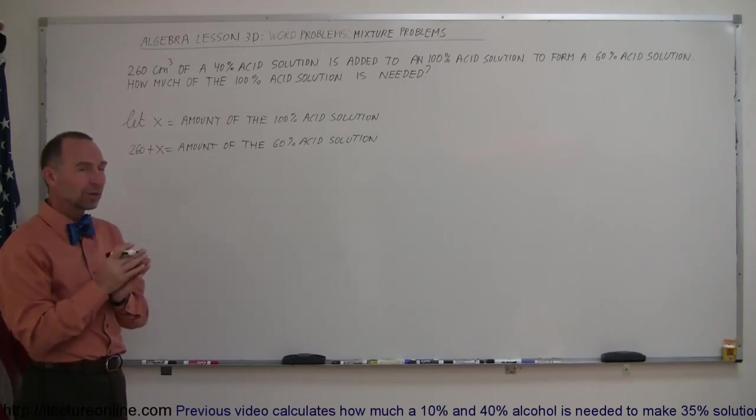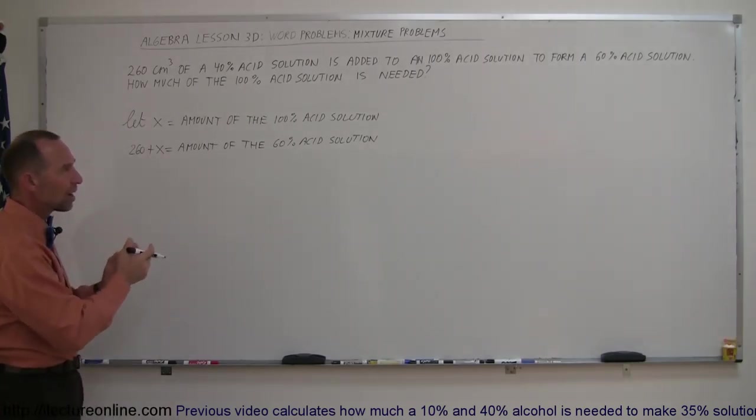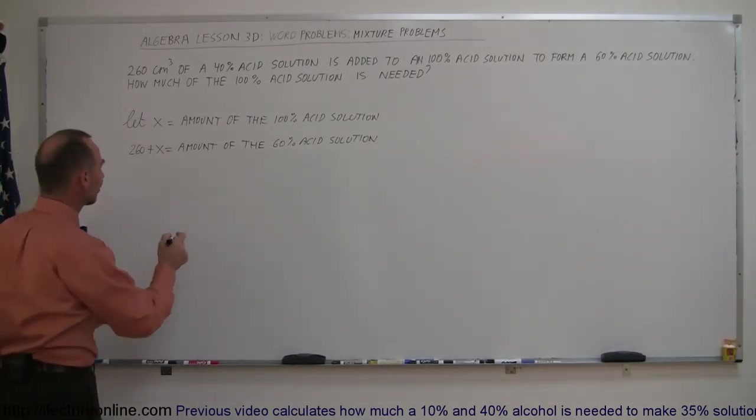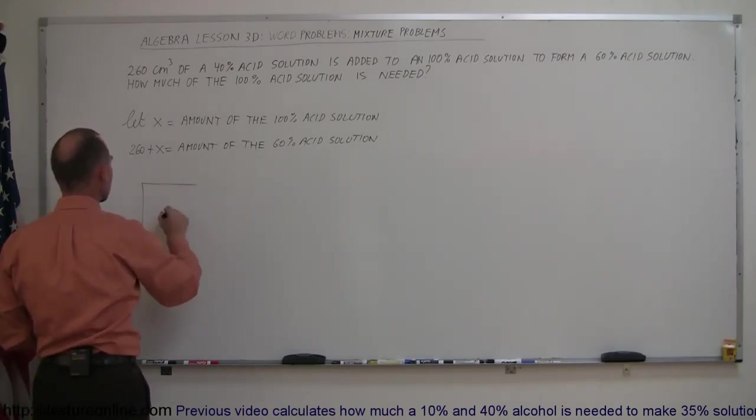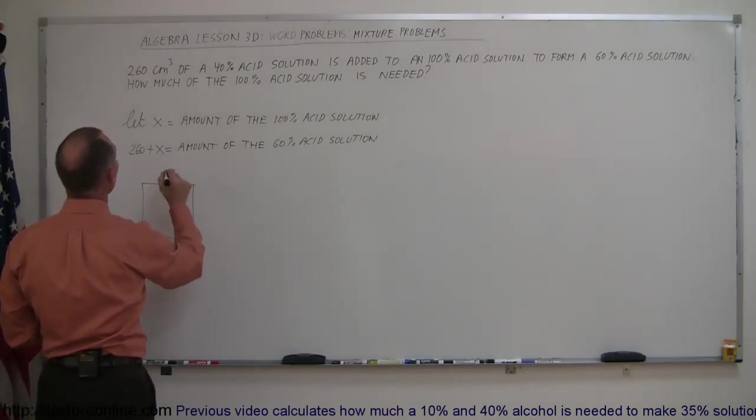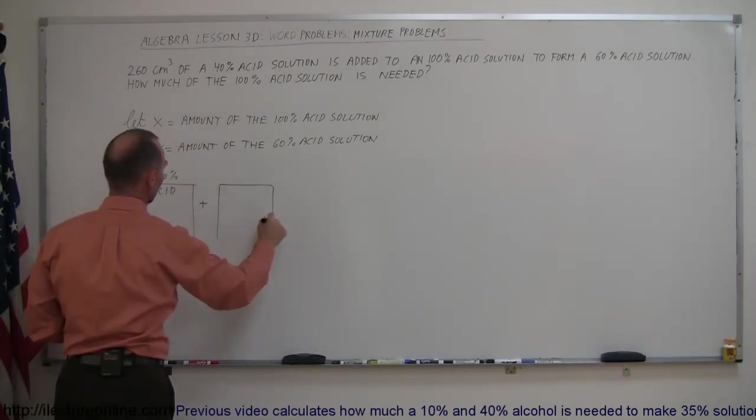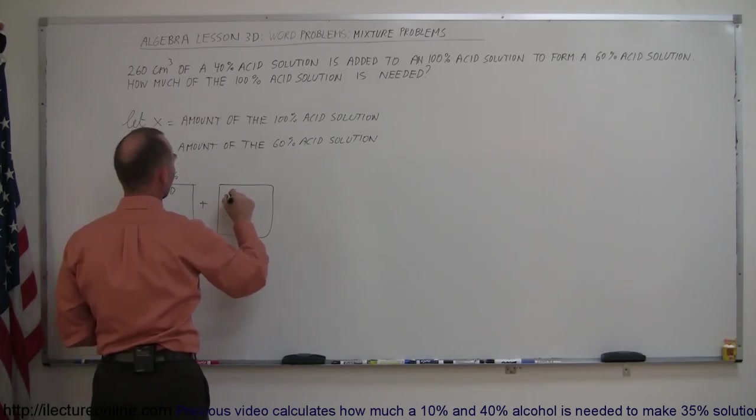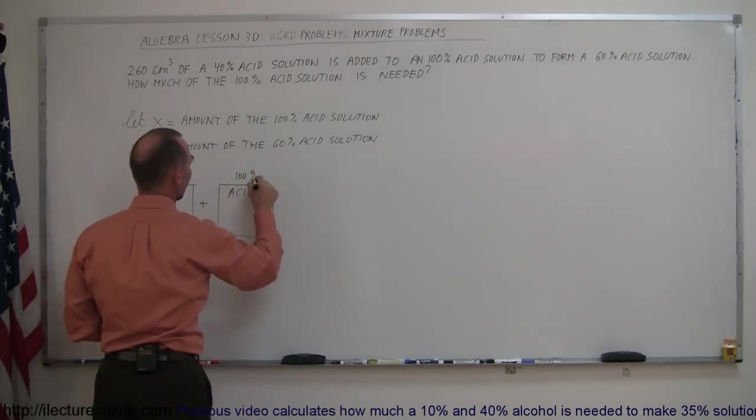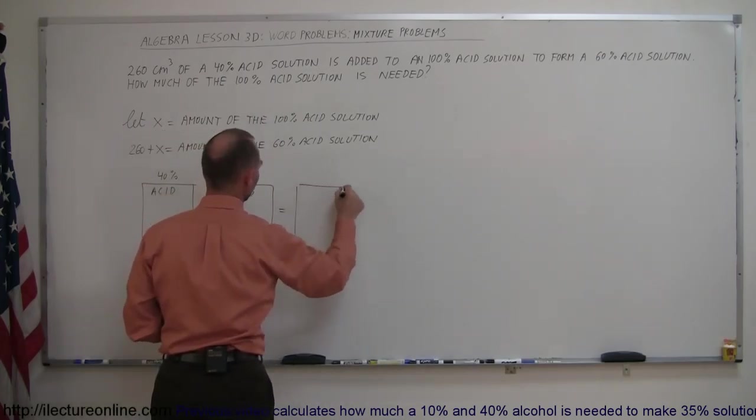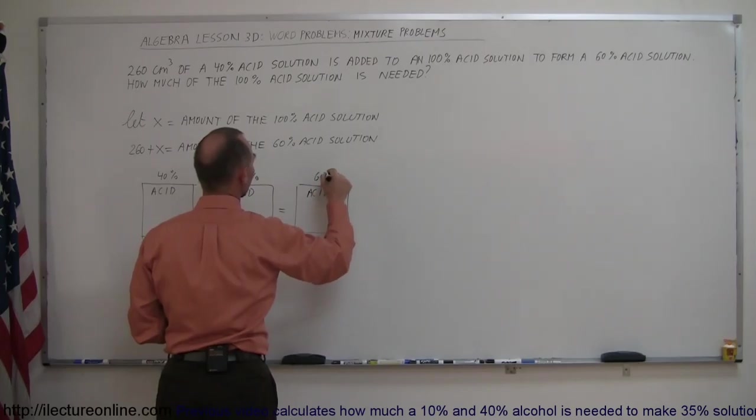Now we can go ahead and solve the problem. The best way to do a mixture problem like this is to keep track of how much acid you have. So the acid in the 40% solution plus the amount of acid in the 100% solution must equal the acid in the 60% solution.